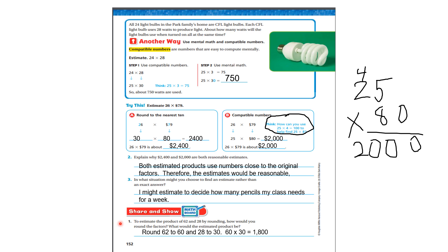It says, to estimate the product of 62 and 28 by rounding, how would you round the factors? What would the estimated product be? Well, 62 rounded to 60 and 28 rounded to 30. 60 times 30 is 1,800.